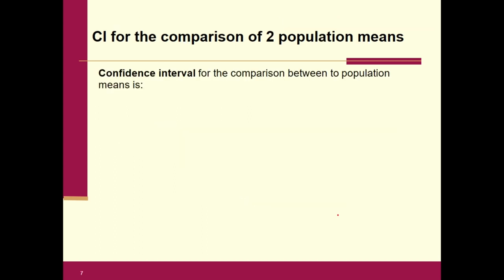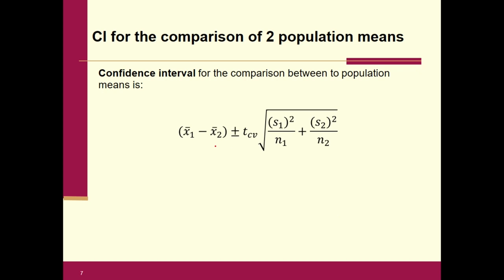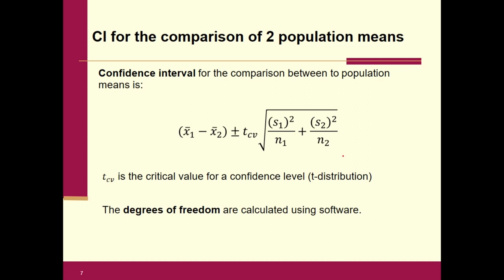We can build a confidence interval to compare the two population means. The formula is: point estimate — x-bar one minus x-bar two — plus or minus the critical value t times the standard error. The degrees of freedom are really ugly to calculate; it's not as simple as n minus one because we have two groups combined with weighted averages, and it's quite complicated.